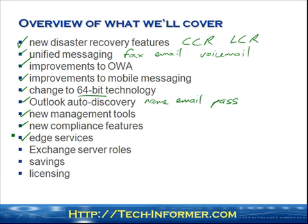We'll look at edge services, which enables you to do anti-spam, anti-virus and content filtering both within and without your network. Then exchange server roles — the Exchange architecture has changed fairly drastically. Exchange can now be split into five different roles and therefore installed on five different servers if that's what you want to do, though all these roles can be consolidated with a few exceptions. Finally, we'll briefly look at licensing and the savings you can achieve with the new Exchange 2007.